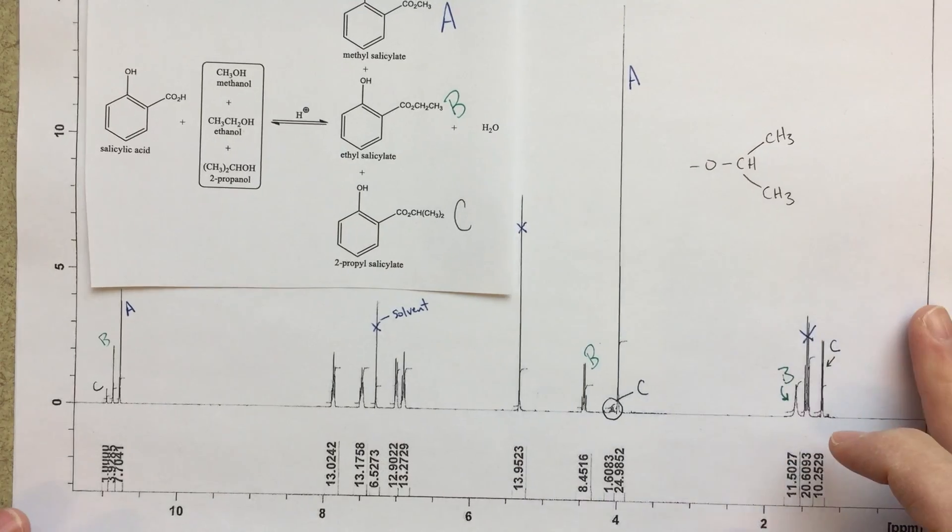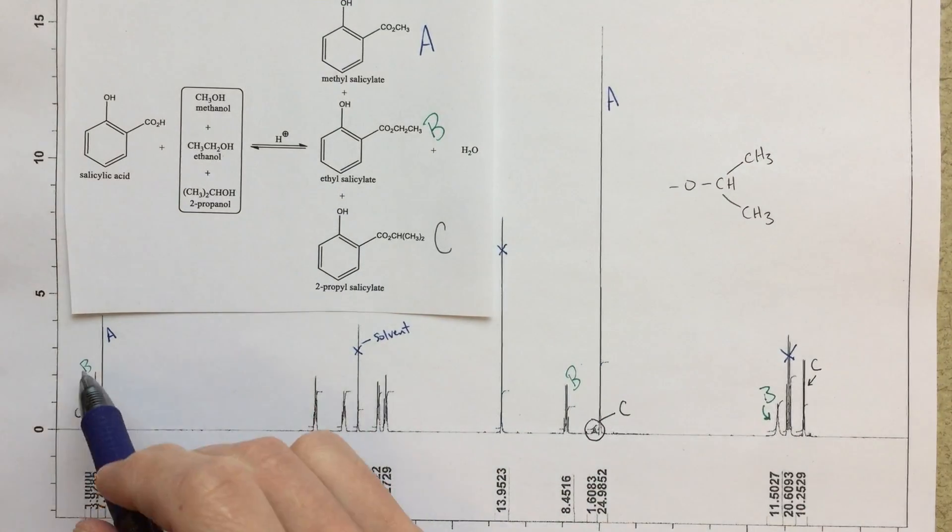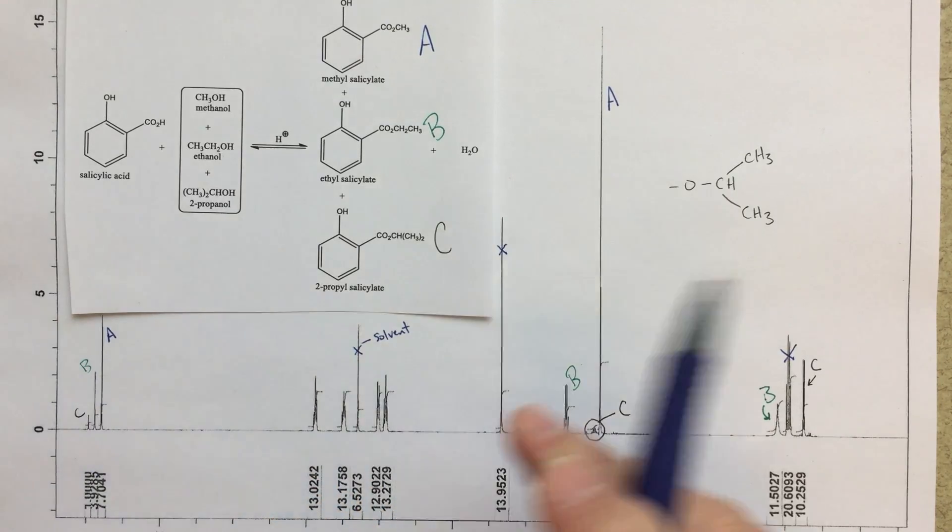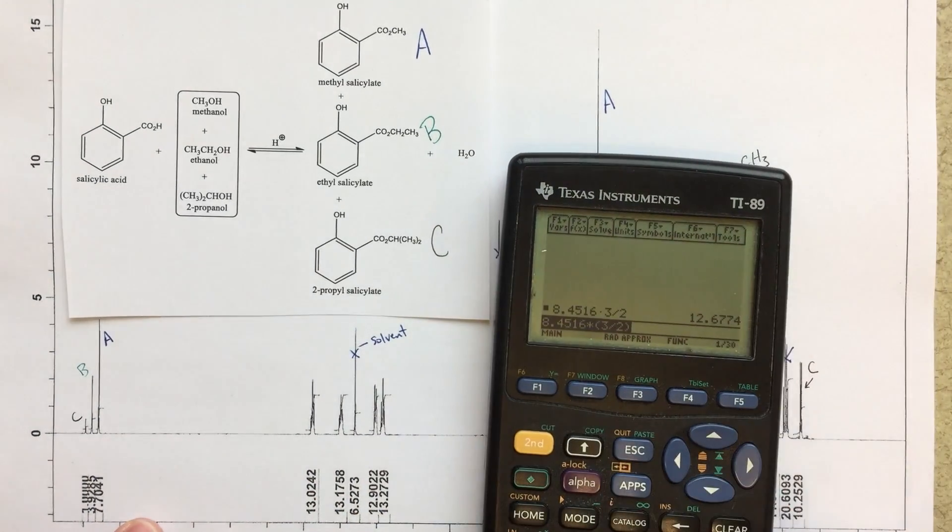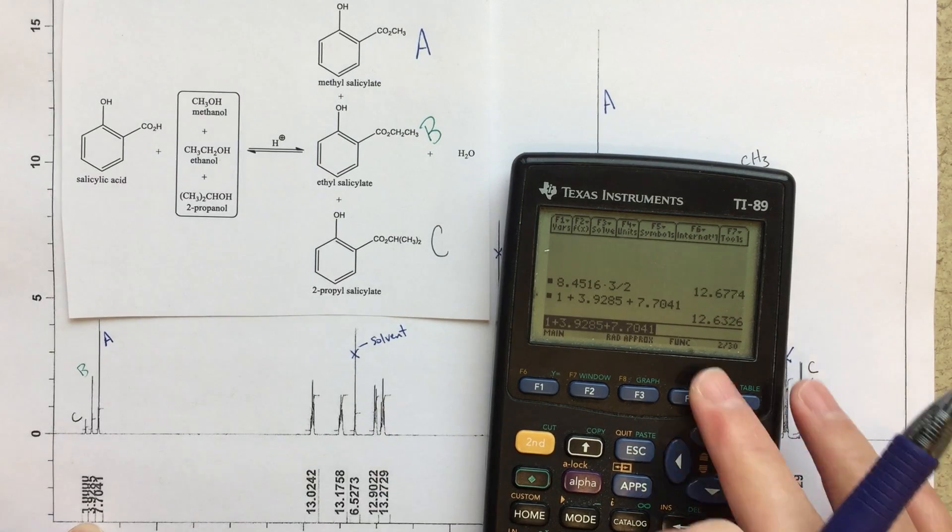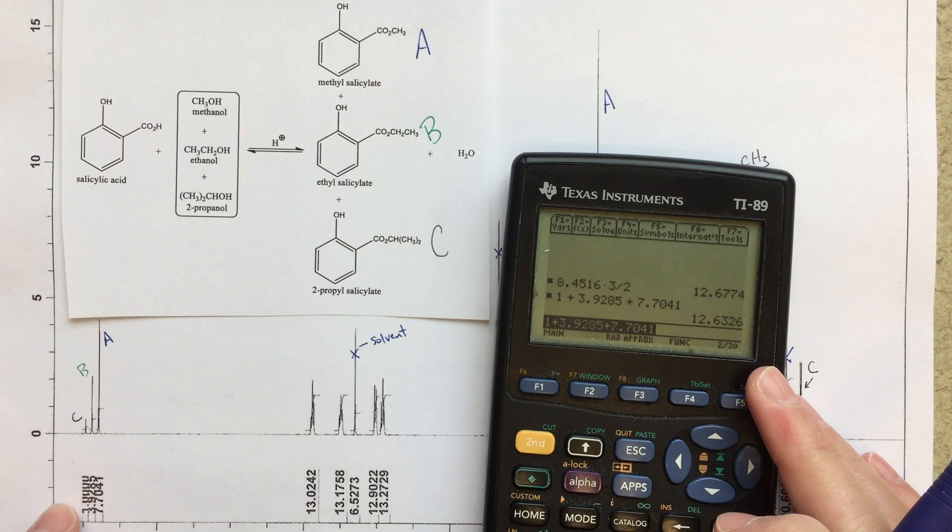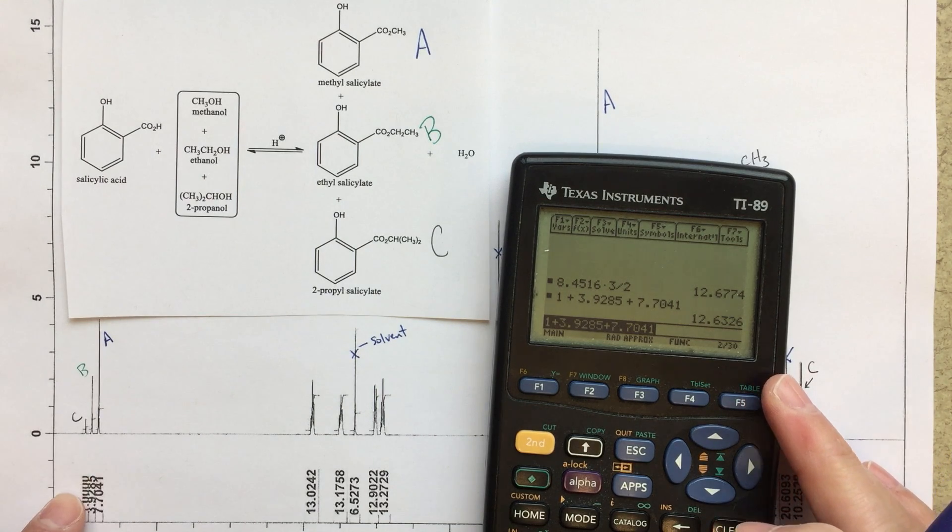And the way that I would do that is I would add up the integrals for all of my species. So 1 plus 3.9285 plus 7.7041 gives us 12.63. That 12.63, that's sort of the sum, the total for all of these integrals.